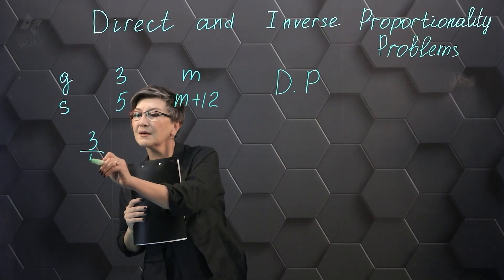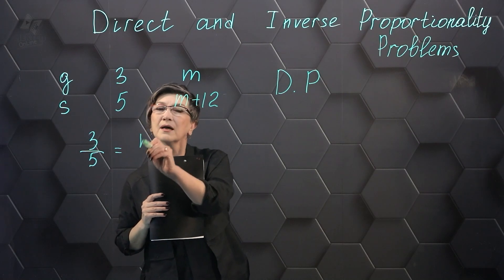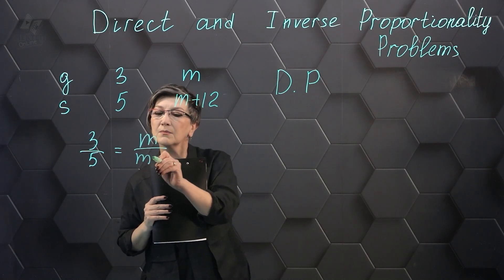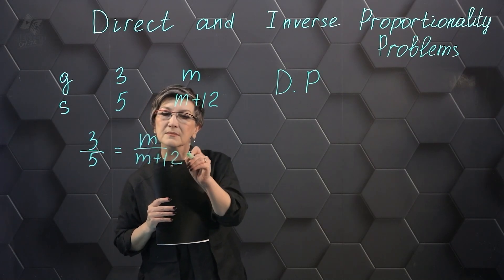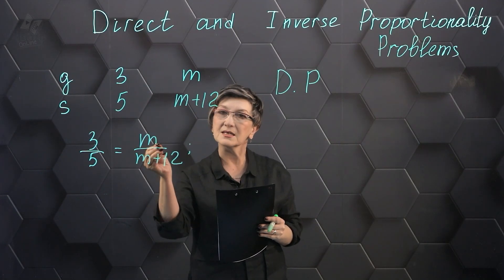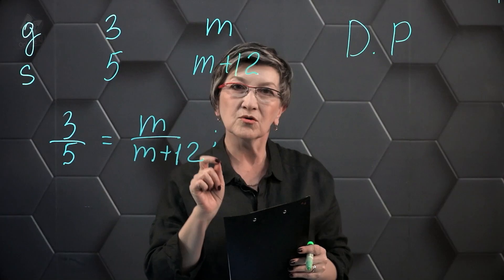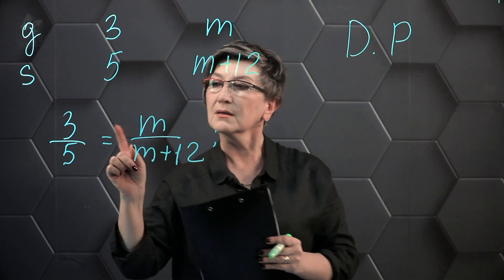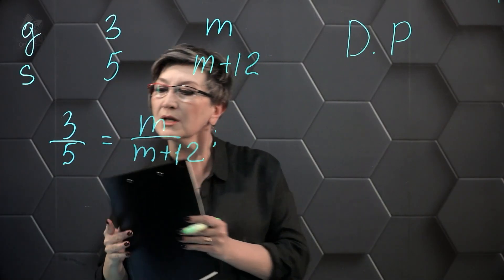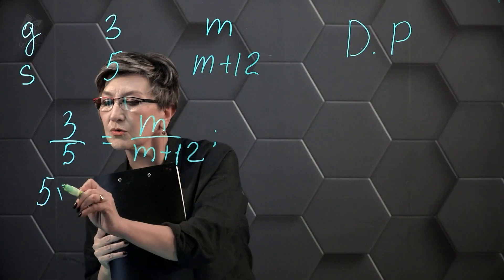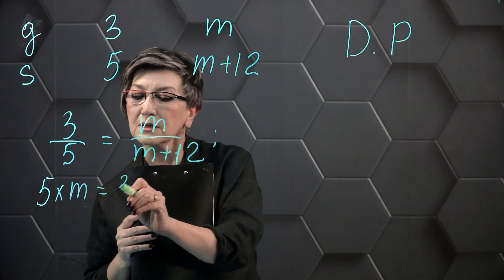We need to find the value of M from this proportion. We use the basic rule of proportion. 5 times M, 5 times M equals 3 times M plus 12.